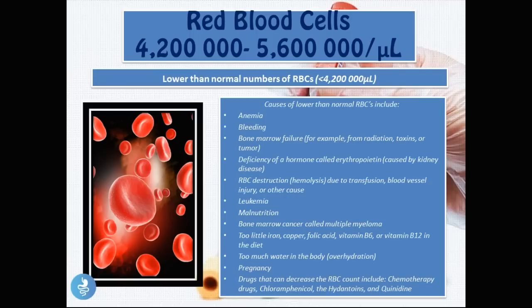A lower than normal red blood cell count means values below 4.2 million per microliter. Causes include anemia, bleeding, bone marrow failure from radiation, toxins, or a tumor, deficiency of erythropoietin due to kidney disease, and red blood cell destruction called hemolysis due to transfusion, blood vessel injury, or other causes.